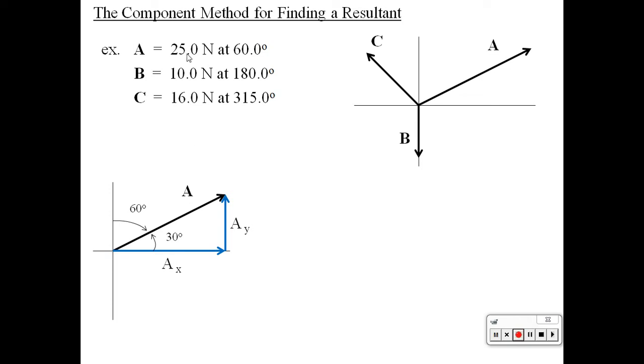Cosine of 30 is A sub X over 25. Multiplying the 25 over, we get A sub X is equal to 25 times cosine of 30, which turns out to be 21.7 Newtons.